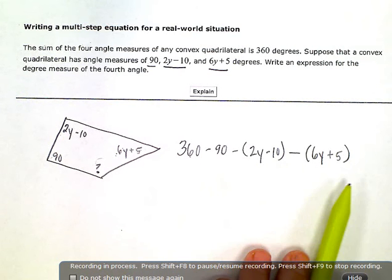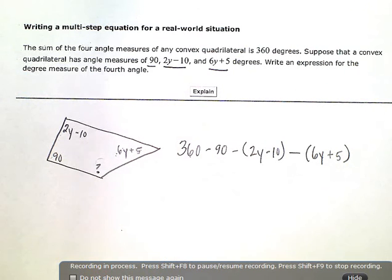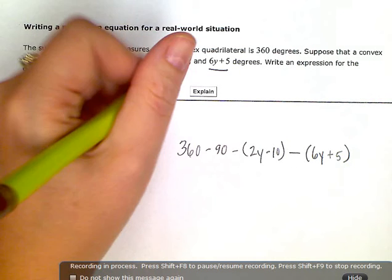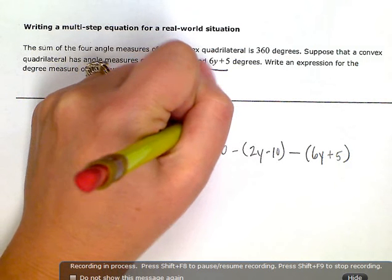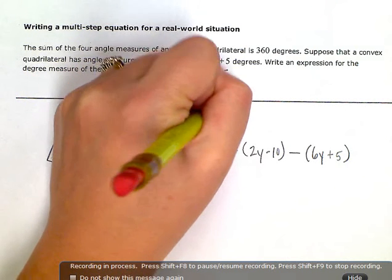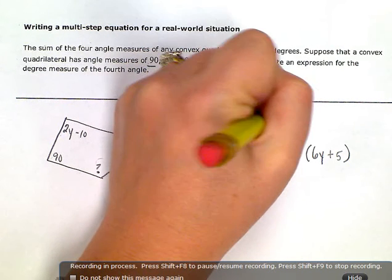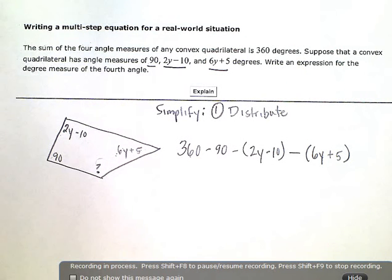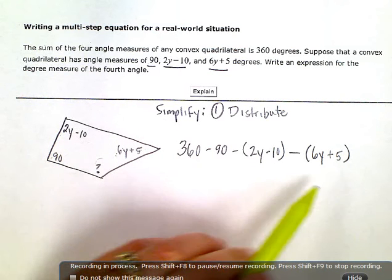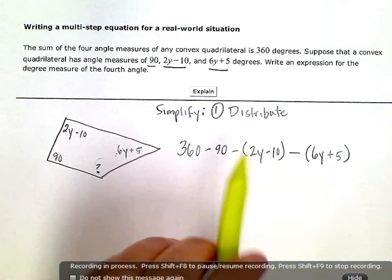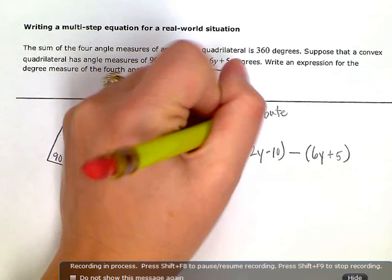Technically, I'm done. This is an expression for the degree measure of the fourth angle. The thing I'm going to do now is just simplify. So when we're simplifying expressions, we're going to do two things. The first thing we're going to do is distribute to get rid of any parentheses. So we're just taking this and trying to make it simpler, to get rid of some things if we can. We're going to distribute to get rid of any parentheses, and then we're going to combine any like terms we can.